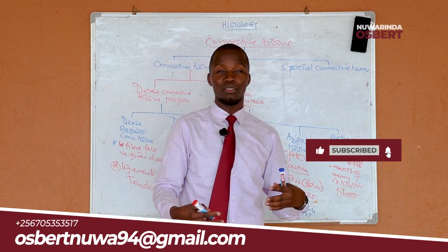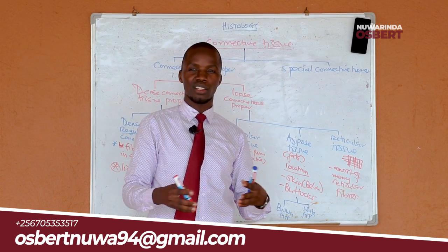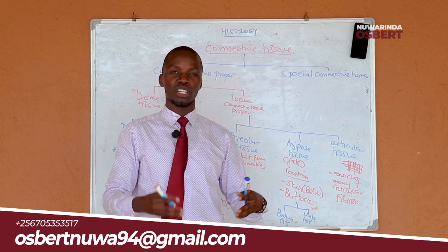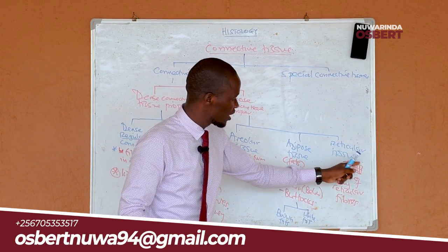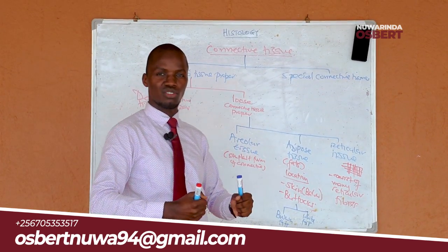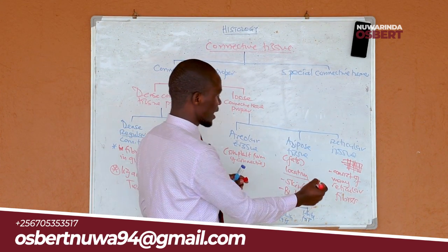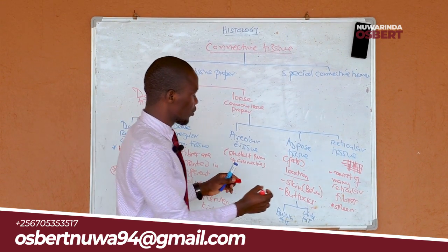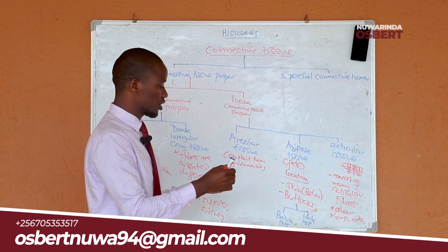You may have heard about reticular venation in leaves, where the veins form a mesh-like network — it is similar here. When fibers form this kind of network, we call them reticular fibers — a special type of collagen fiber. Reticular tissue is found in areas like the spleen and the lymph nodes, and so on.